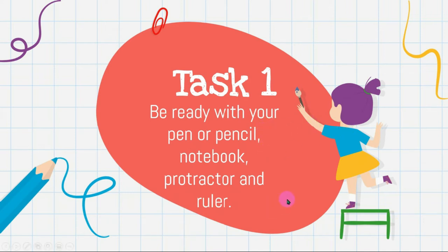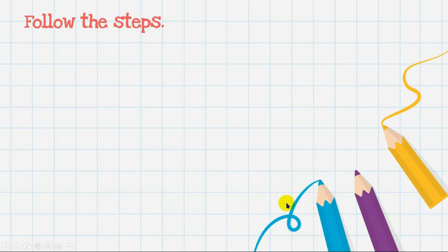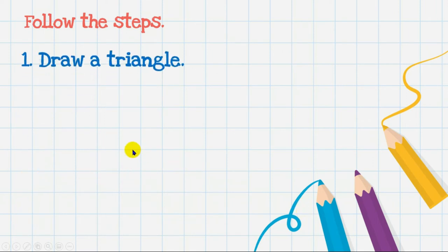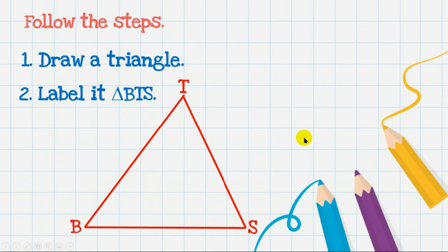Let's have our steps to follow to construct angle bisectors using a protractor and ruler. Later on, I will insert a video clip on how we can construct angle bisectors using compass and ruler as well. For step one, we have to draw the triangle. Please label it triangle BTS.